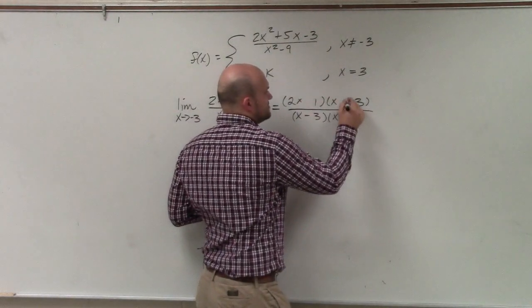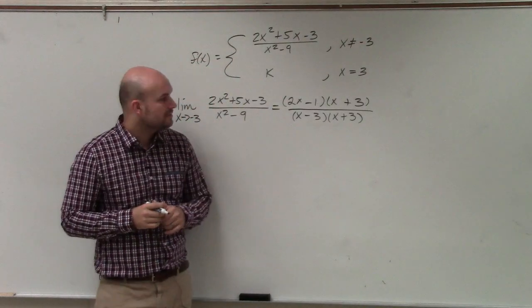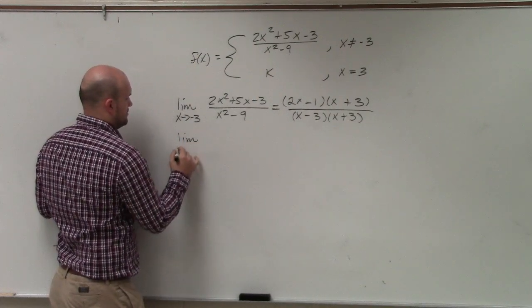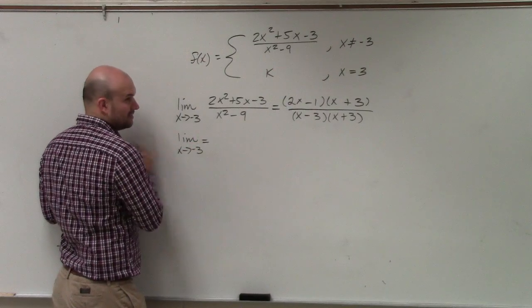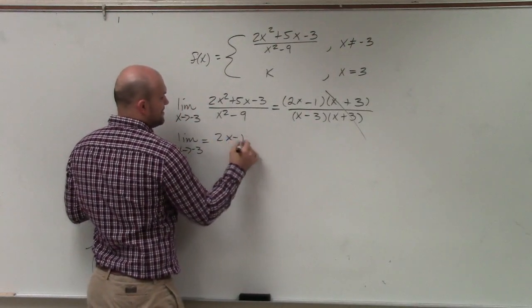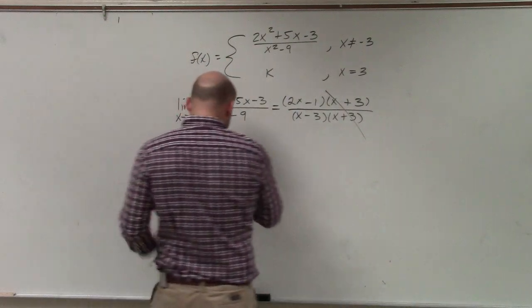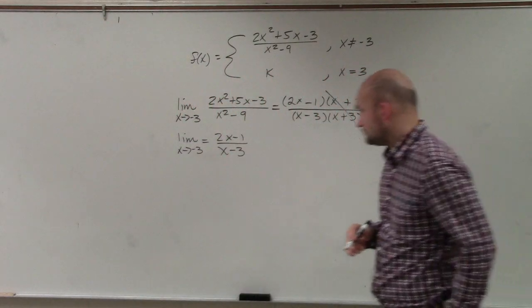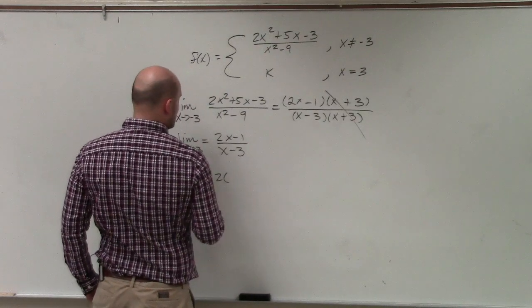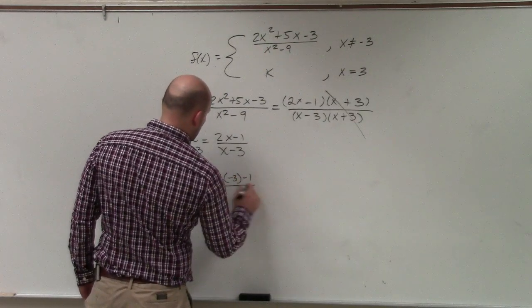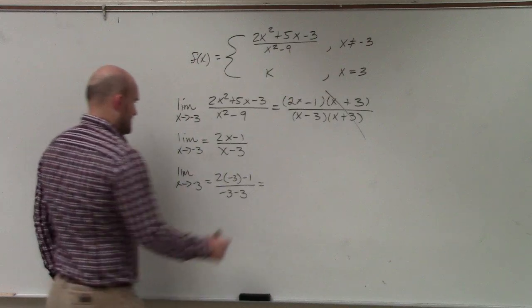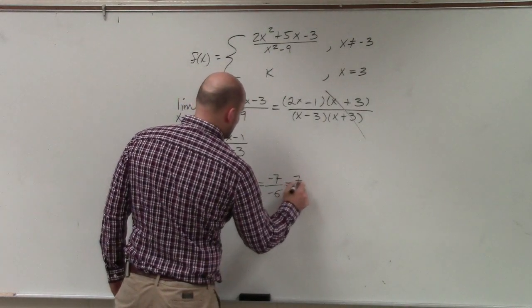I switched those — that's positive, that's negative. So now let's simplify the limit. Using limit notation, I know those are going to divide out, so I'm left with 2x minus 1 over x minus 3. Now I can evaluate for x equals negative 3: that's 2 times negative 3 minus 1 over negative 3 minus 3.